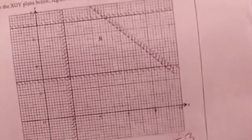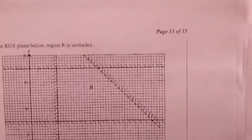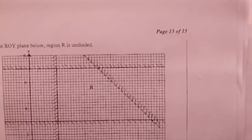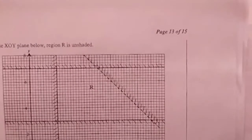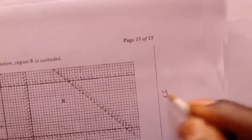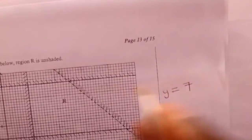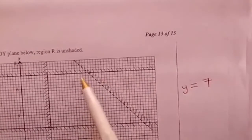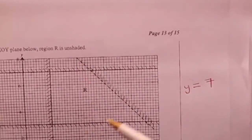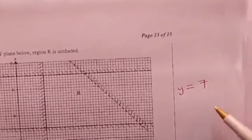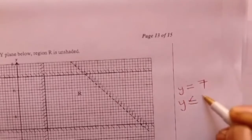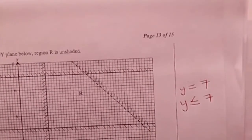We move on to the third inequality. This line is passing through 7, which is between 6 and 8. The 7 is the value on the y-axis. Therefore, y is equal to 7, which is the equation of the line. The inequality is determined by the position of R. R is below the line. Below the line means lesser. Since the line is solid, y is less than or equal to 7, which is the third inequality.